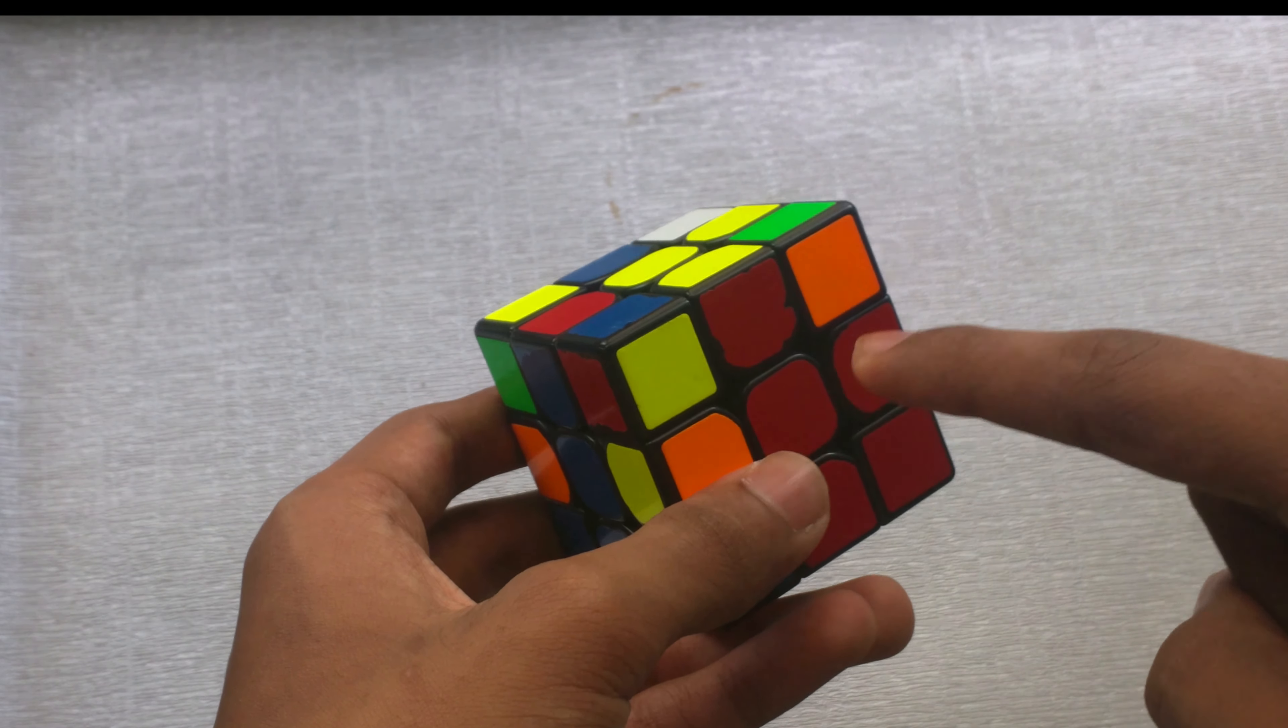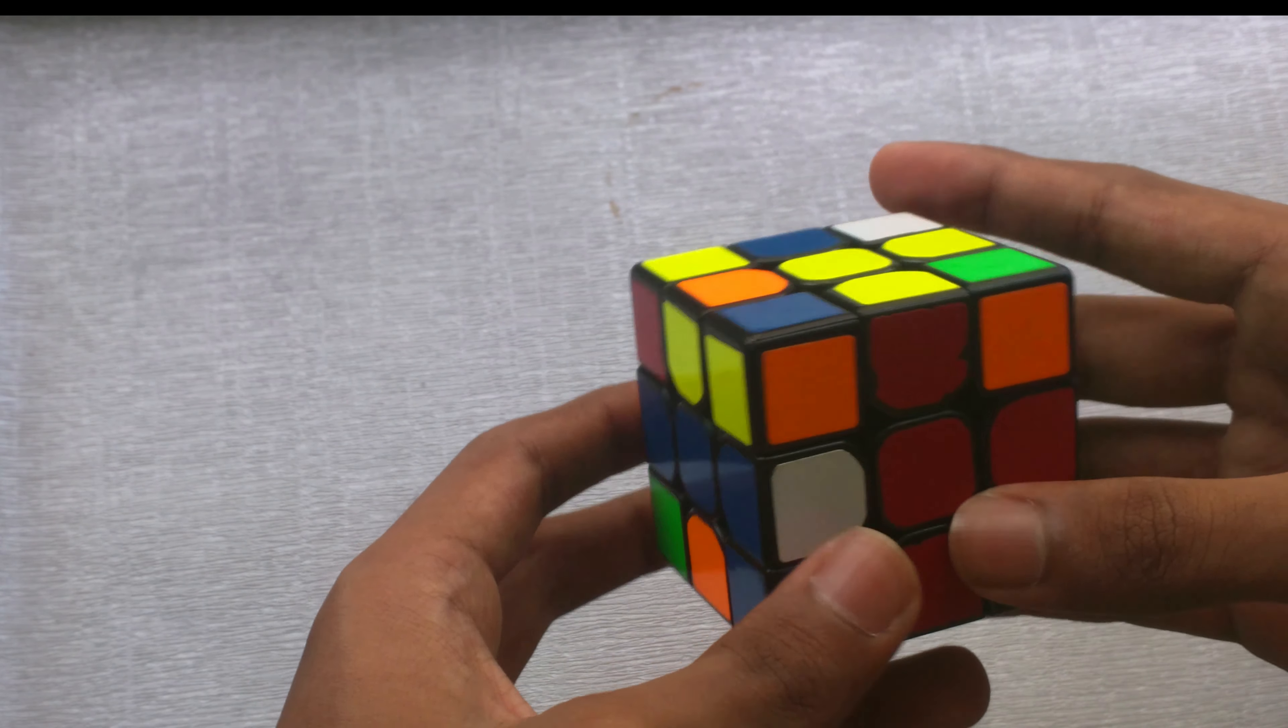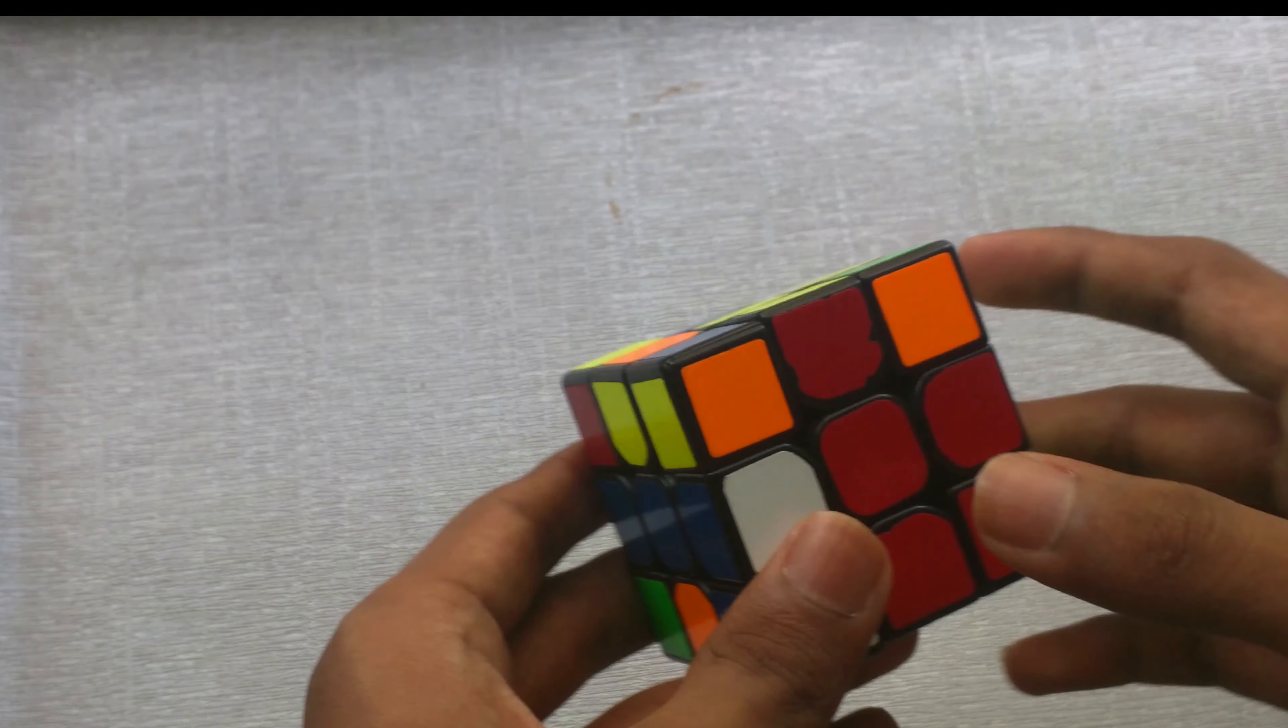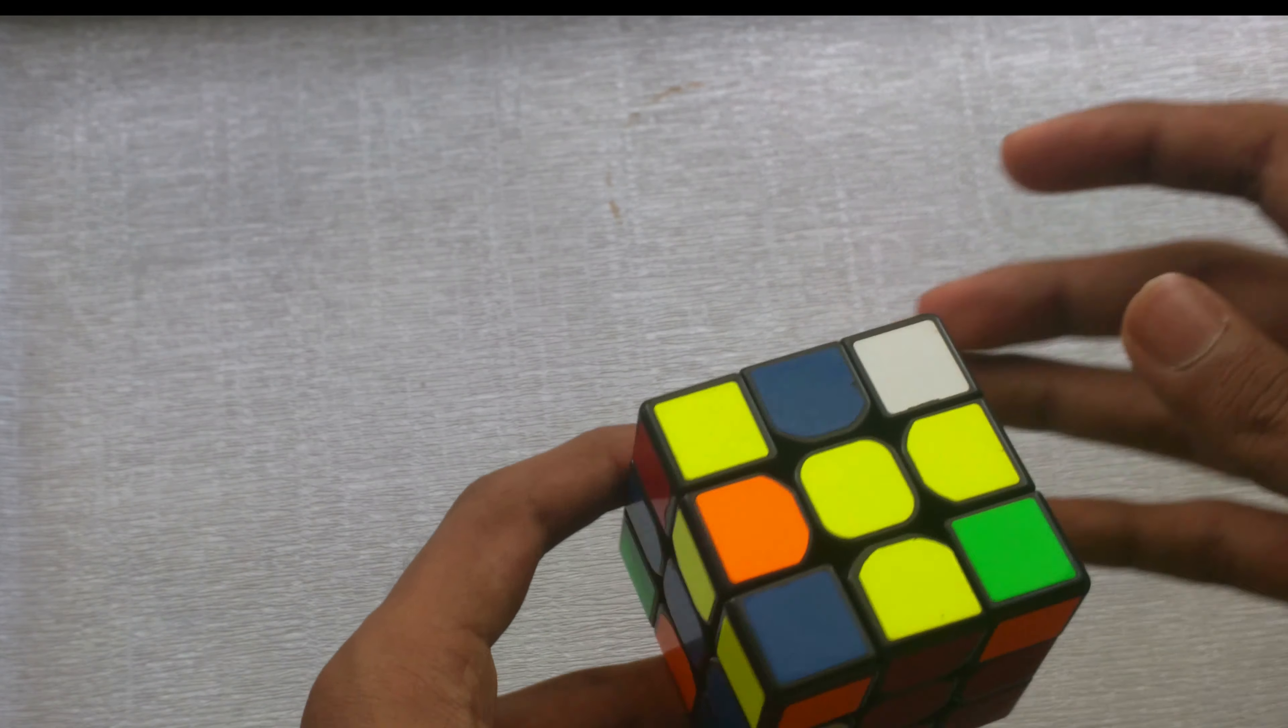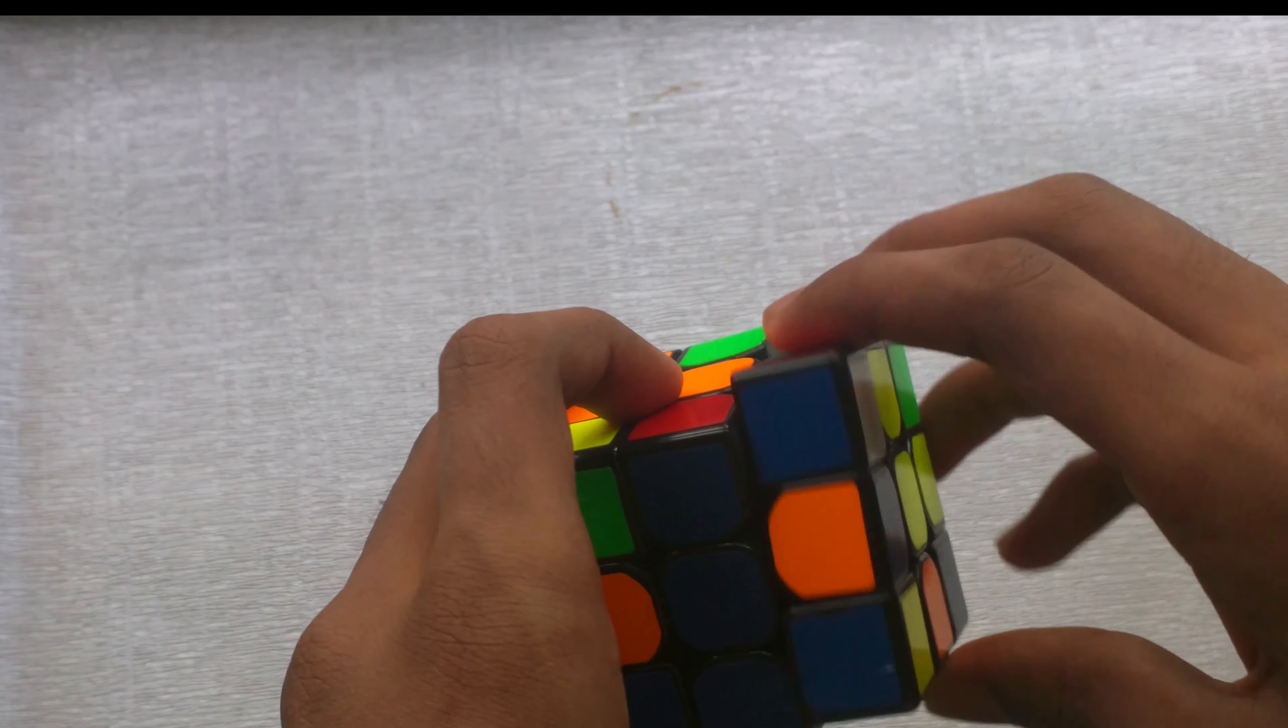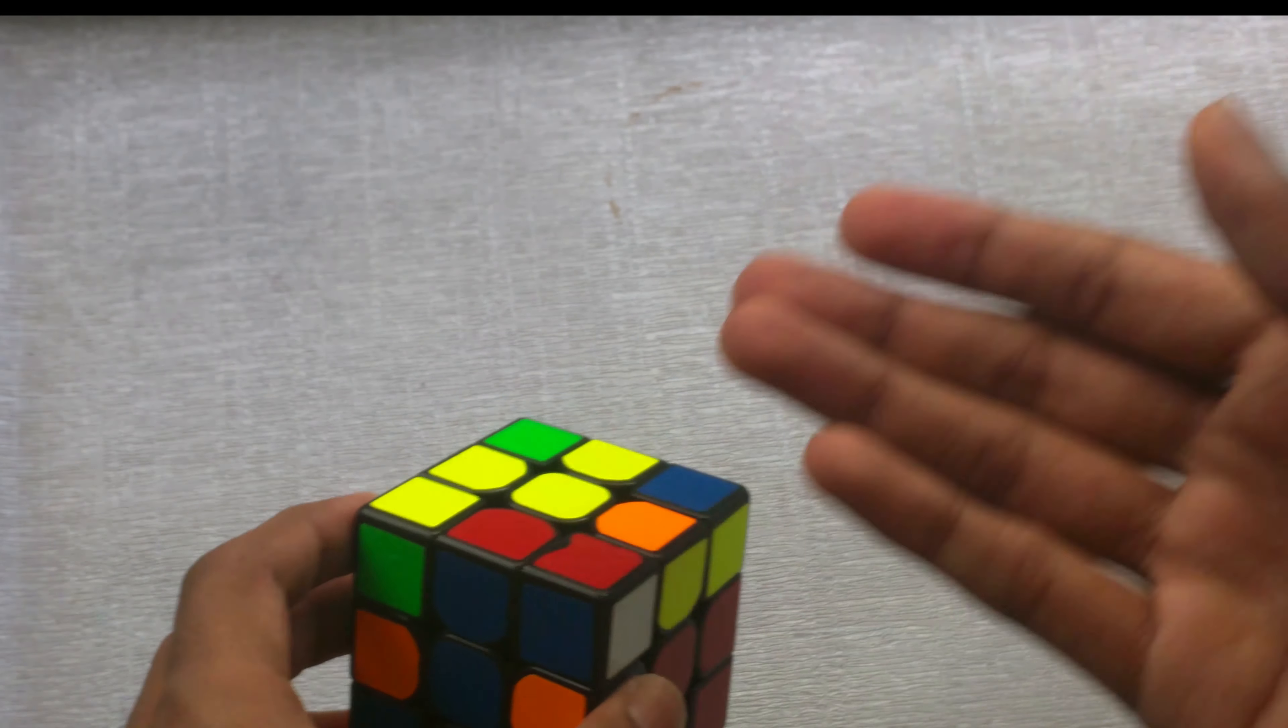So you want to move this edge away from the center that the top sticker is. So like this, the red center, move it away. Then you want to move the corner piece, the white corner piece, above this edge. Then you want to move it back down. Now as you can see, that formed a pair.